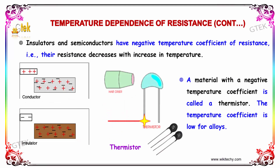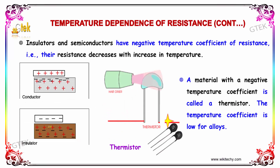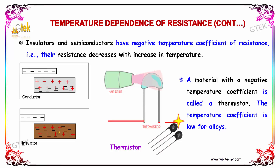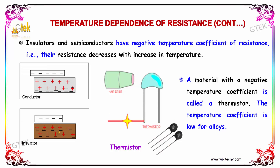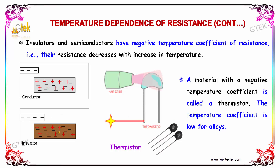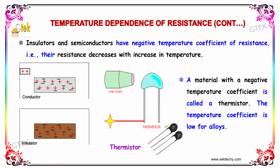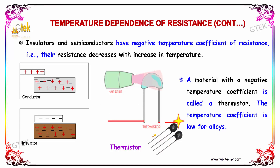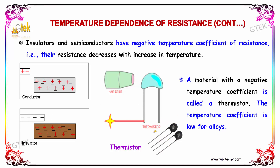Insulators and semiconductors will have a negative temperature coefficient of resistance, so their resistance will decrease with the increase in temperature. A material with a negative temperature coefficient is called a thermistor. The temperature coefficient is low for alloys.